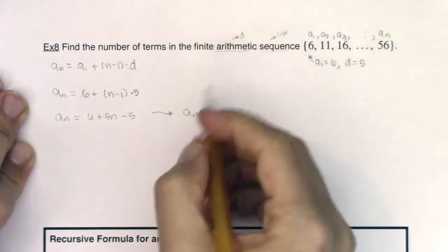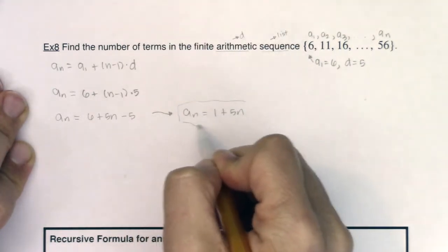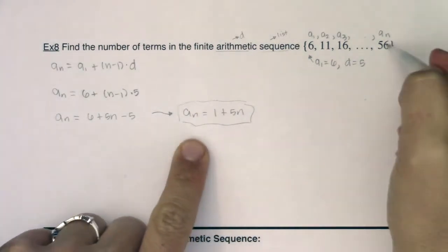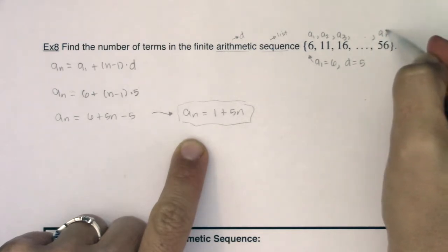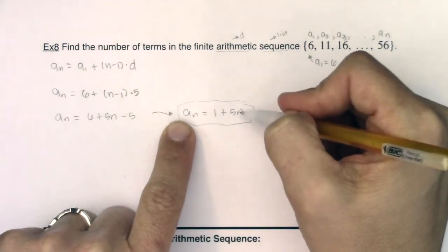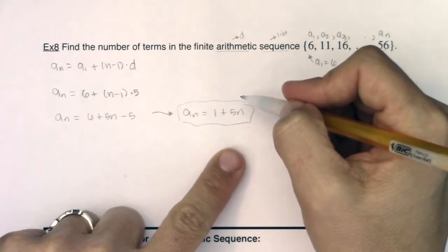So there is my explicit formula, which is great. But we also happen to know the nth term—we just don't know what n itself is. But I know a sub n as a whole is 56, so I know this number can be 56, and that would allow me to solve for n. So let's take this one step further and say that we know 56 is equal to 1 plus 5n.